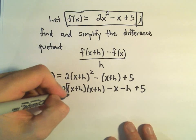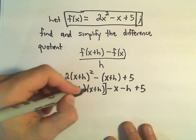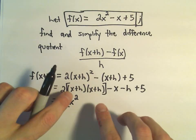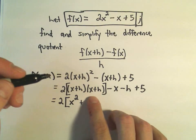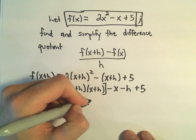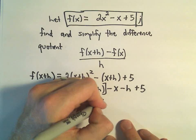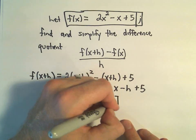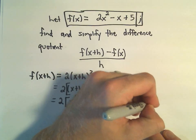Okay, so I'm going to distribute out the x plus h and the x plus h. So x and x is x squared. x times h is xh plus another hx. So we would have 2 of those hx's. We have positive h and positive h, which would be positive h squared. And then we still have negative x minus h plus 5.